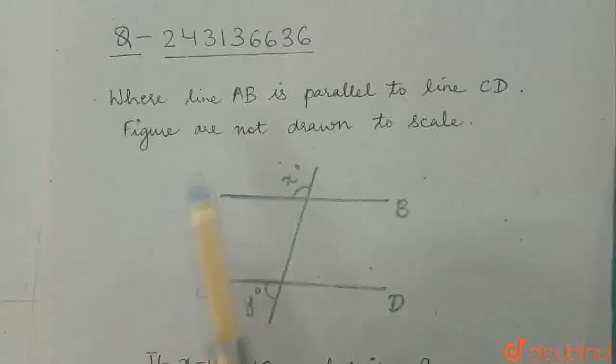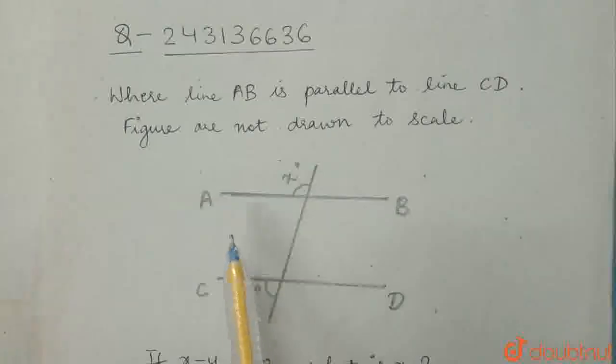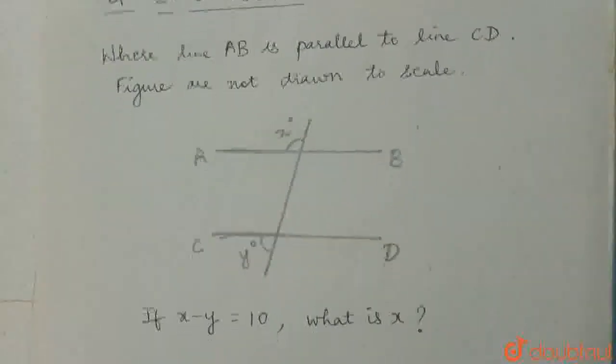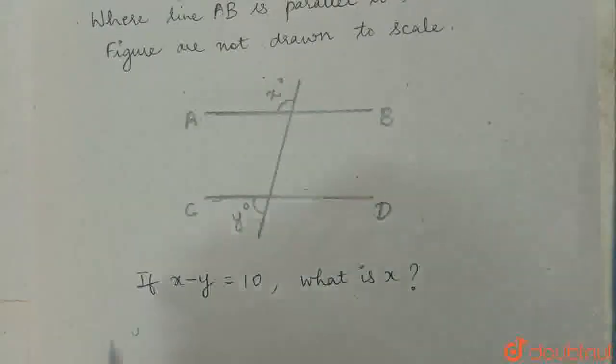Our question is, where line AB is parallel to line CD, figure is not drawn to scale. This is the figure given to us and we are given that AB is parallel to CD and if x minus y is equal to 10, what is x?